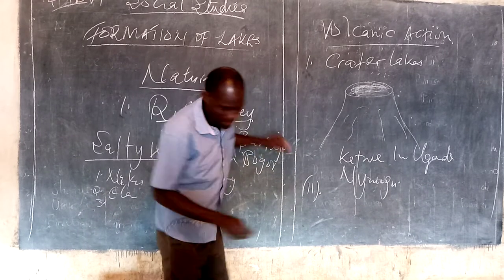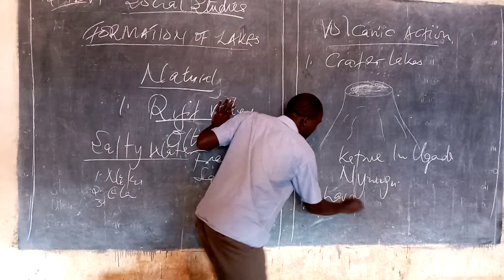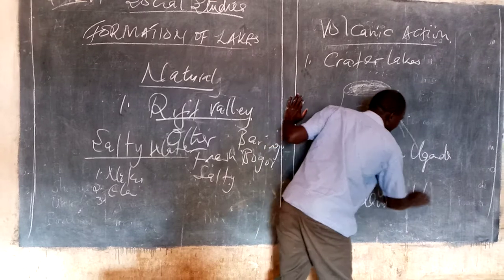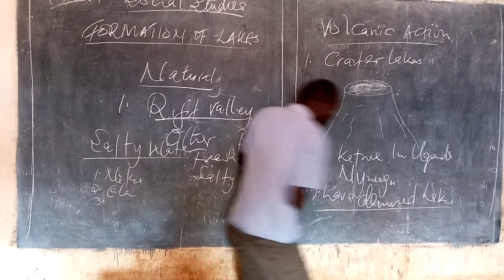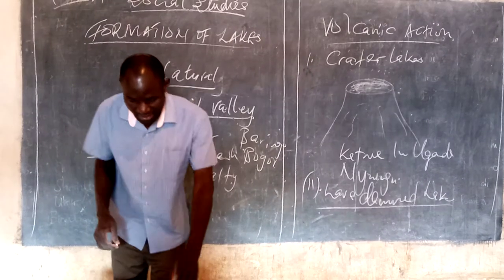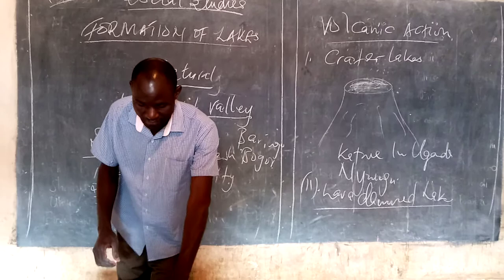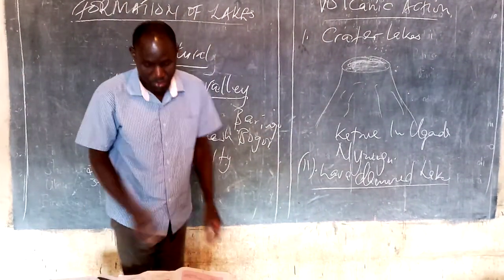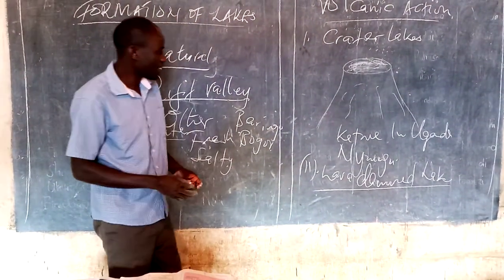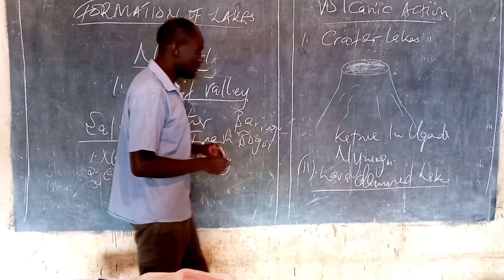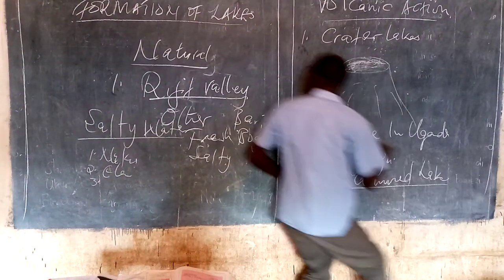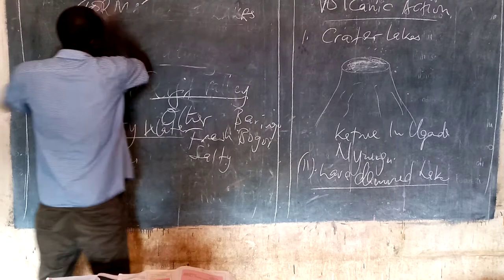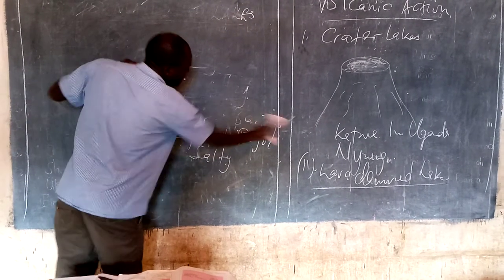We have also another type called lava dam lakes. These are examples of volcanic lakes. Lava dam lakes are formed when lava flows and blocks the flow of a river, and a lava dam lake is formed.